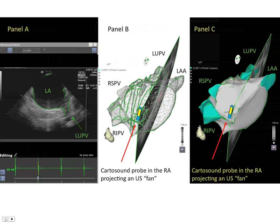This image shows image acquisition and 3D map construction using CartoSound technology. On the left, you can see a frozen intracardiac echo image. During each acquisition, 3 seconds of intracardiac echocardiography are recorded, during which one can acquire a number of gated images of the cardiac structures of interest. In this case, the left atrium was viewed into the left upper pulmonary vein.